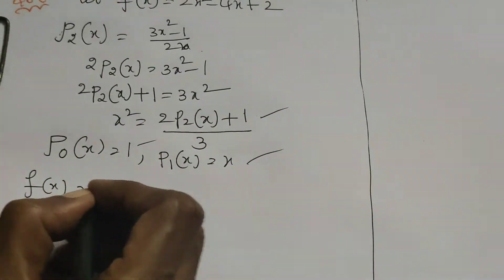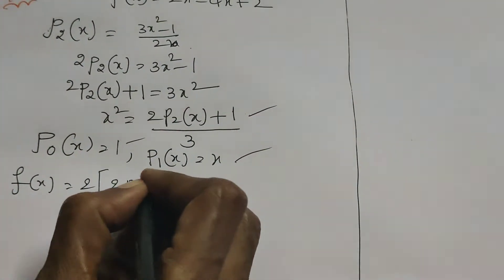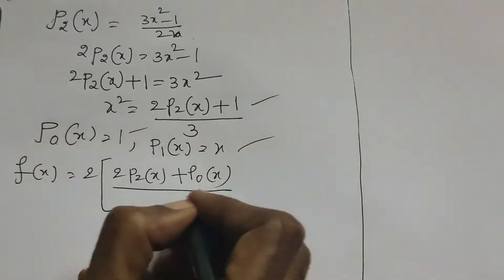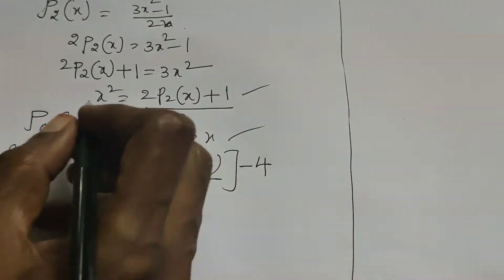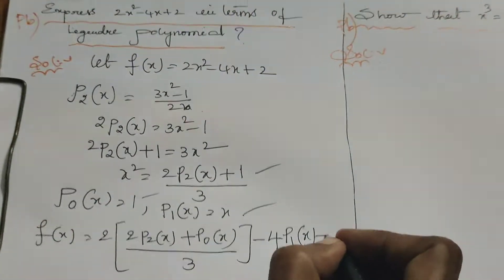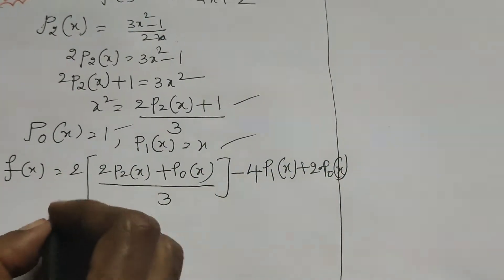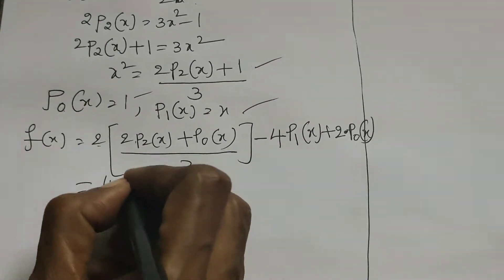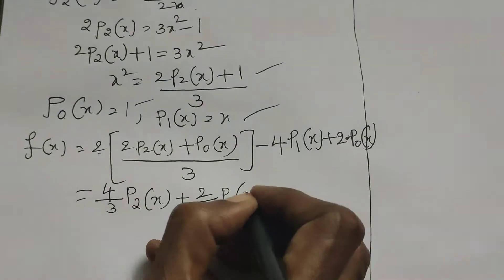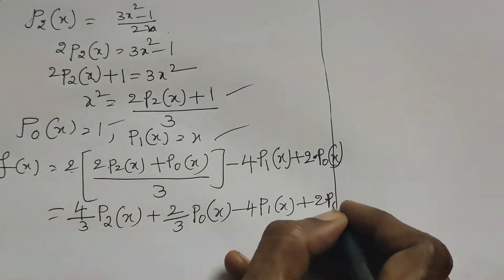Then f(x) = 2 · [(2·P2(x) + P0(x)) / 3] minus 4·P1(x) plus 2·P0(x). Expanding: (4/3)·P2(x) + (2/3)·P0(x) minus 4·P1(x) plus 2·P0(x).